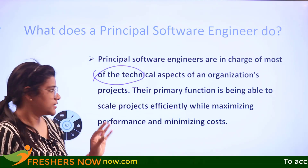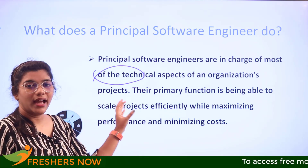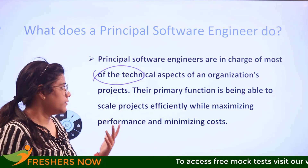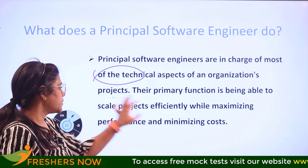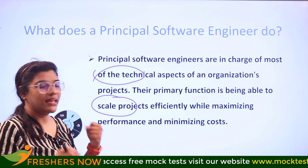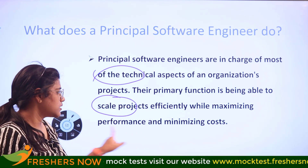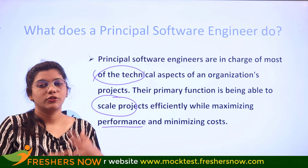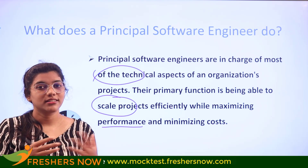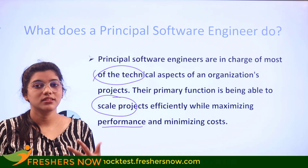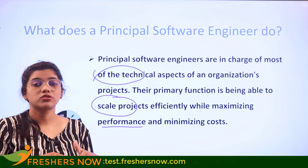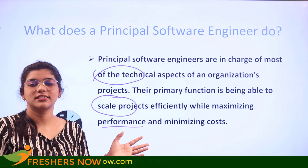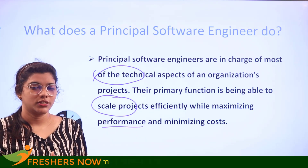What does a principal software engineer actually do? They would be in charge of most of the technical aspects of an organization and handling the major projects of the company. Their primary function includes looking into sales projects, efficiently maximizing performance and minimizing cost. There are various kinds of fluctuations in the work, and stepping into this role requires not only the skills but fulfillment of the responsibilities as well.